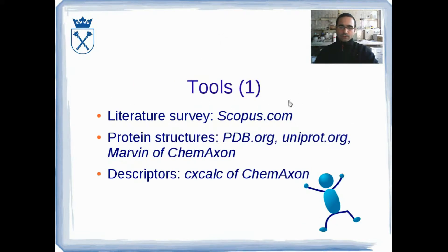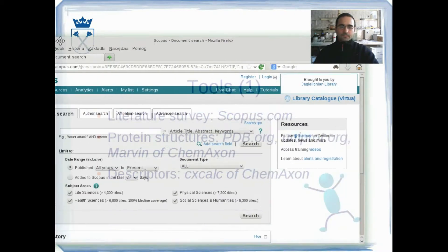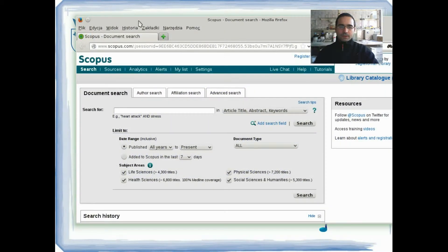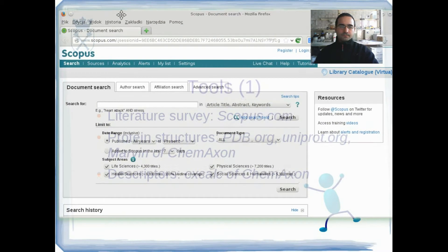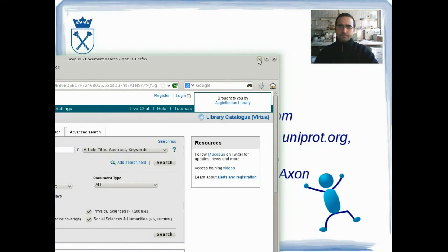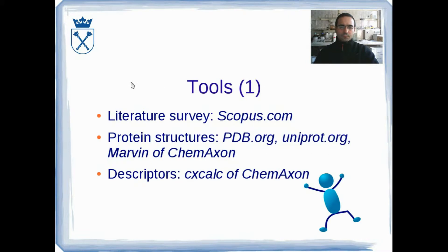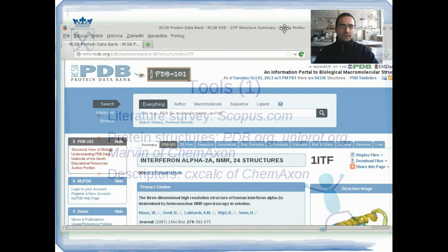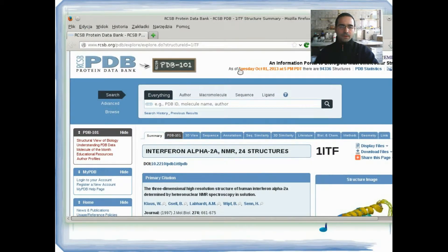The tools we used: First, a literature survey was done using databases like Scopus.com. Protein structures were obtained from databases like PDB.org.